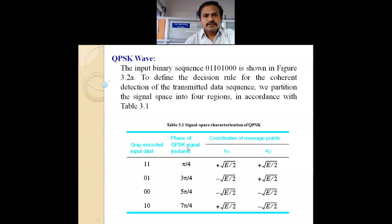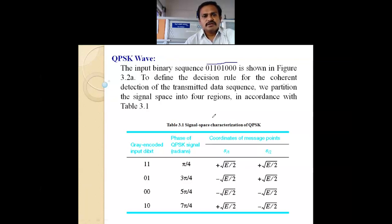Observing the QPSK waveform, for an example input binary sequence of 0, 1, 1, 0, 1, 0, 0, 0, as shown in the figure, to define the decision rule for coherent detection of the transmitted data sequence, we partition the signal space into four regions in accordance with a table. The signal space for QPSK has four regions: Z1, Z2, Z3, and Z4.